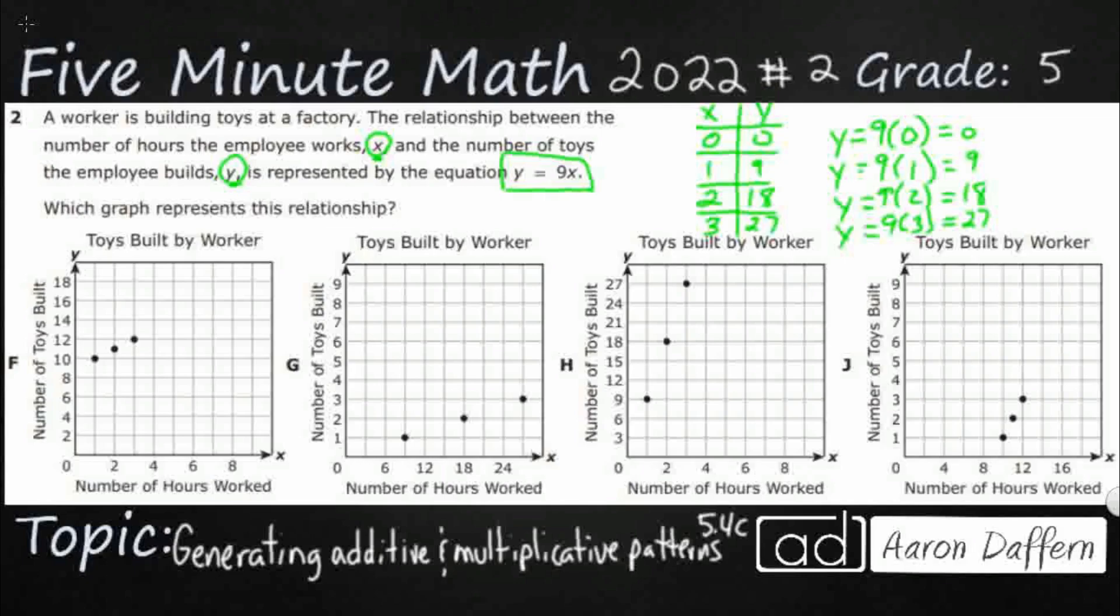So here are my coordinate pairs. 0, 0. Like I said, I don't see that anywhere. So I'm just going to kind of mark that out. But I'm seeing a 1, 9. So let's take a look at this first one on F. I see 1. But look at this coordinate pair right there. It's a 1, 10. So first off, that's wrong. But take a look at their 2. Their x2 looks like 2, 11. And I'm looking for 2, 18. So definitely no on this one.